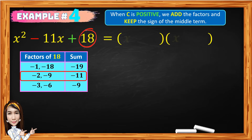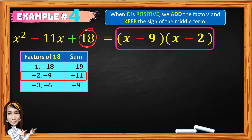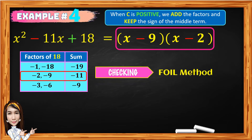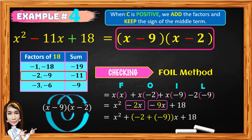The factor of x squared is x times x, and the factors 2 and 9 are both negative. So the factor of x squared minus 11x plus 18 is the quantity x minus 9 times the quantity x minus 2. To check if your factor is correct, we can use the FOIL method. Given the quantity x minus 9 times the quantity x minus 2, the product is x squared minus 11x plus 18. And you got it correct.